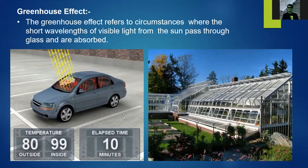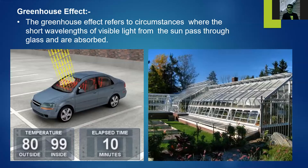Another property is the greenhouse effect. The greenhouse effect refers to circumstances where short wavelengths of visible light from the sun pass through the glass and are absorbed inside. For example, sunlight passes through a car windshield and creates a rise of temperature inside — about 19 percent above outside temperature. If the outside is about 80 degrees Fahrenheit, the inside will be about 99 degrees Fahrenheit within exactly 10 minutes of sun exposure.